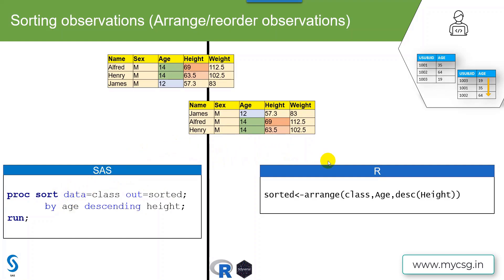In the tidyverse package, we have a function called arrange(). We specify the name of the input dataset as the first argument, followed by the list of variables separated by commas. Here I have specified the age variable first, for which I want to give sorting preference first.